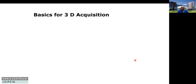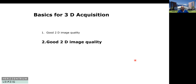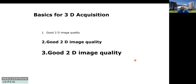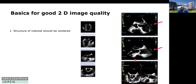The basics for 3D acquisition — as I have mentioned before — is good 2D image. Second, good 2D image. Third, good 2D image. That is the main thing you should focus on before you activate one of the 3D modes. In the basics for 2D, the structure of interest should be centered. If we look at the mid-esophageal views of the aortic valve, the aortic valve is centered in the mid-esophageal long axis and in the short axis, but it's not centered in the five-chamber and the long axis.